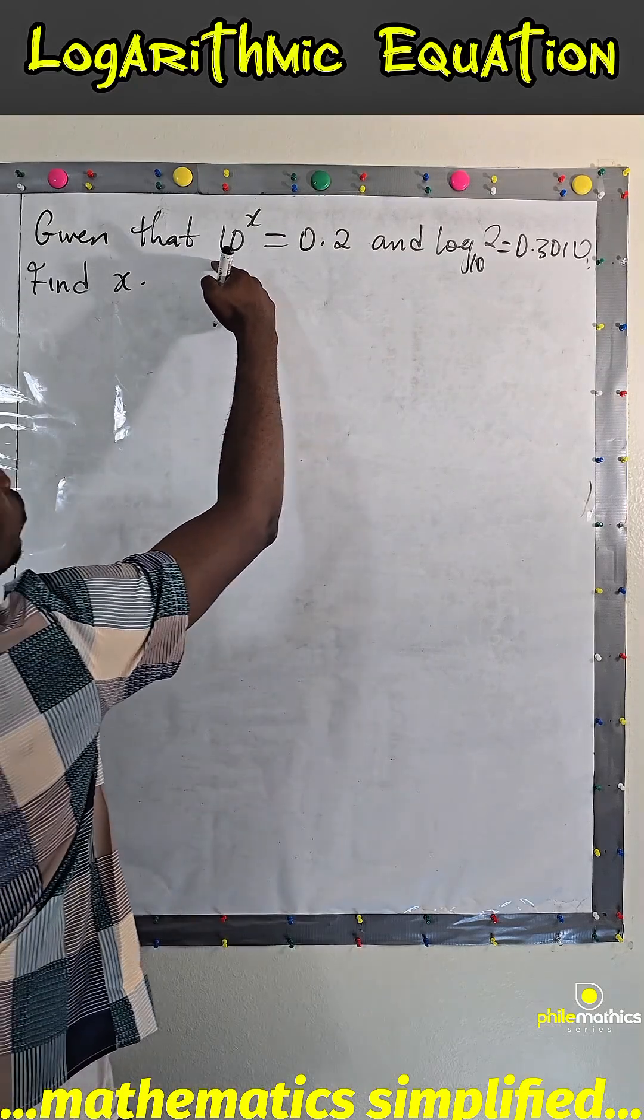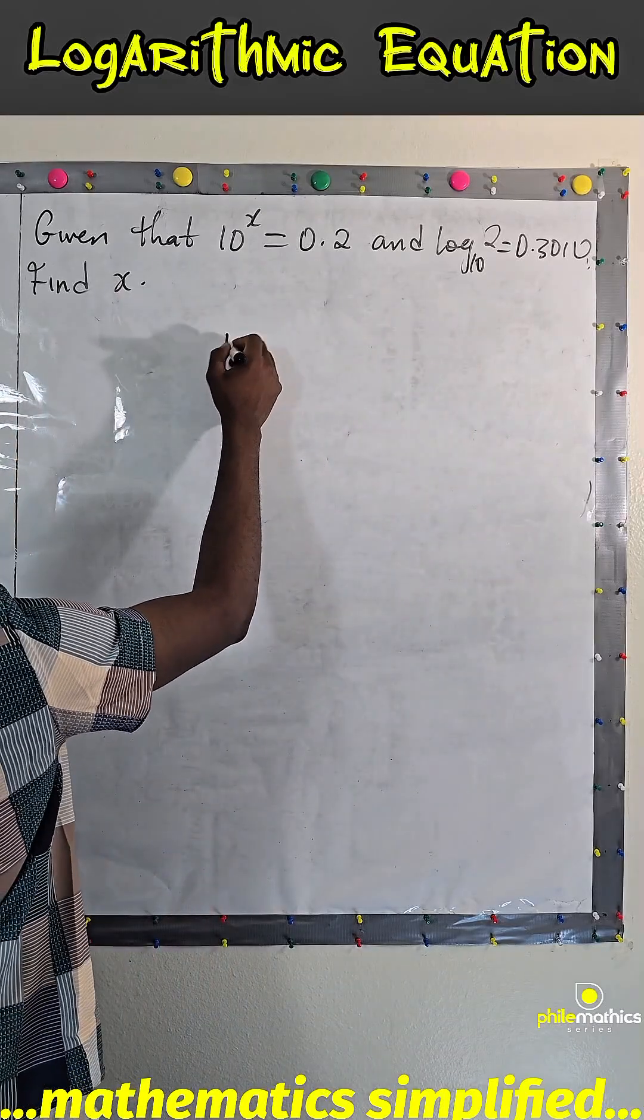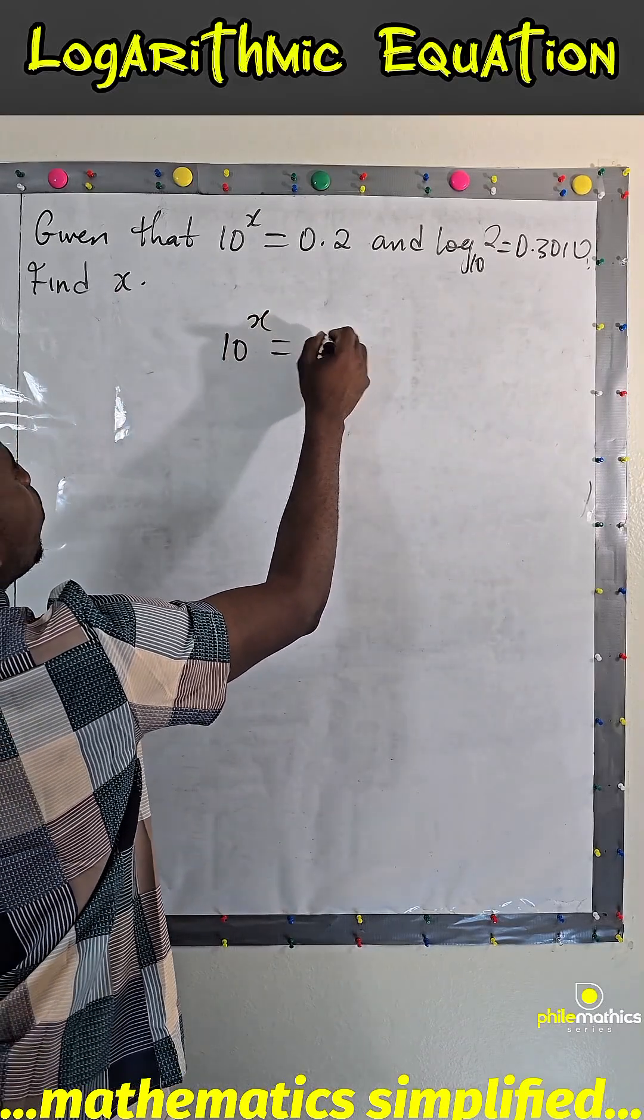With what we are given, that is what we use to find what x is. 10 to the power x is 0.2.